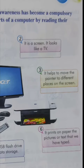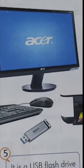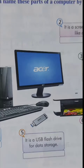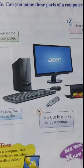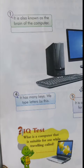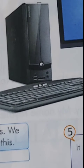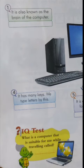Number three helps to move the pointer to different places on the screen - that is the mouse. The mouse helps the mouse pointer move to different places on the screen. It is an input device. Number four is the keyboard, which has many keys. We type letters using it. These keys are the switches or buttons we see on the keyboard.